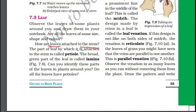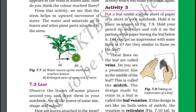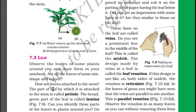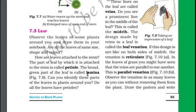How are leaves attached to the stem? The thick part is called the stem of a plant, which holds branches, flowers and leaves. This is called a petiole, which holds the leaf.